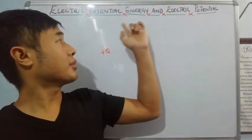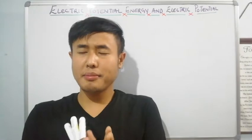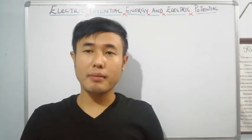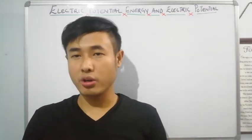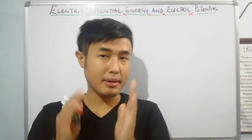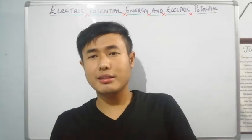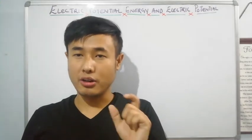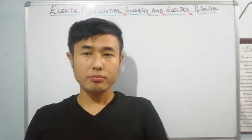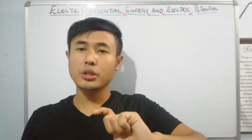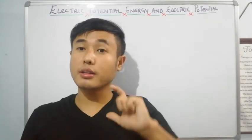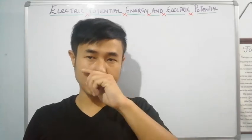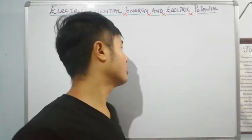So first, electric potential energy is related to change in position or configuration of an object. When an object has a position or configuration change, the work done can be stored in the form of potential energy. Let me come to the point.